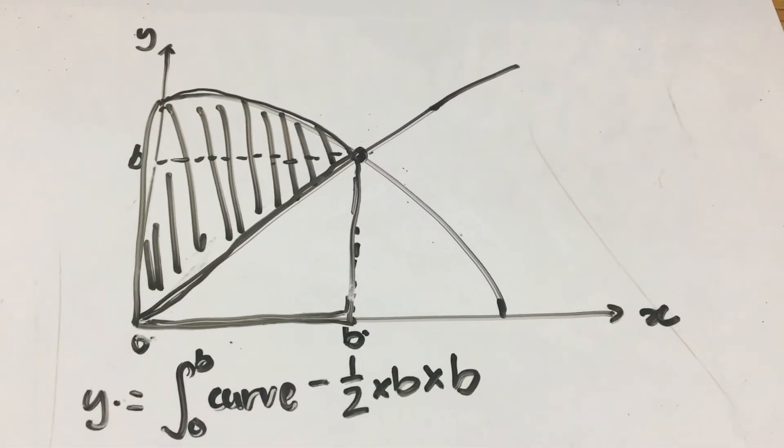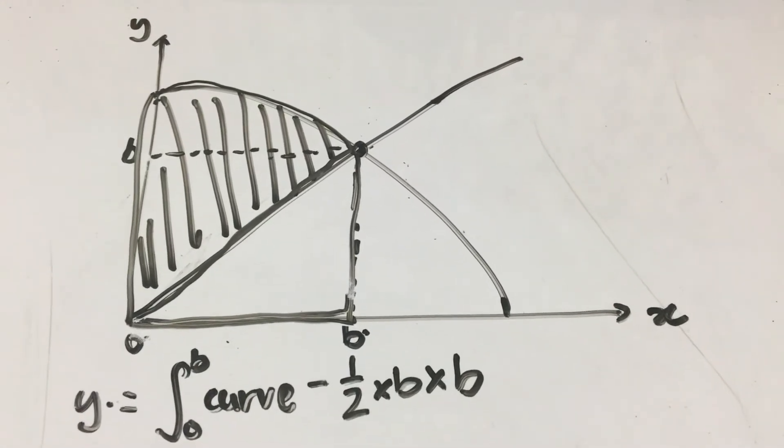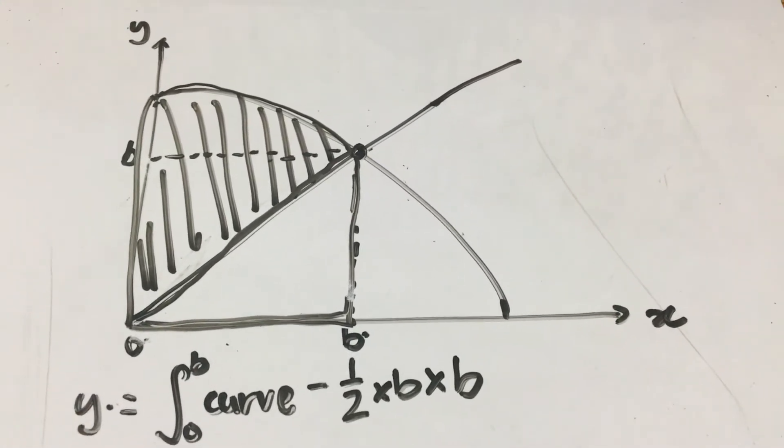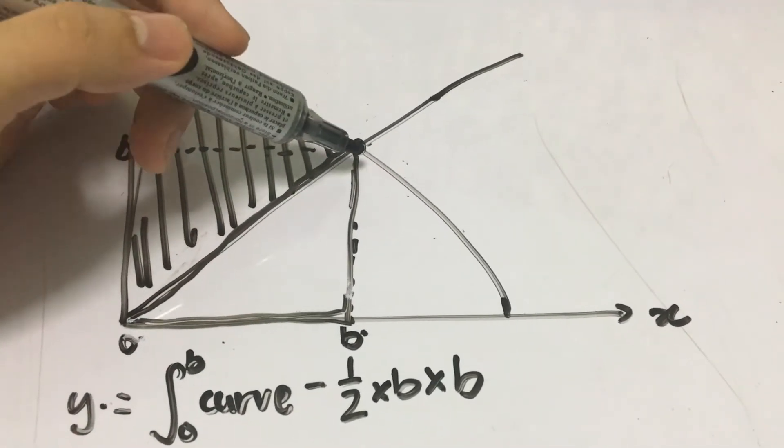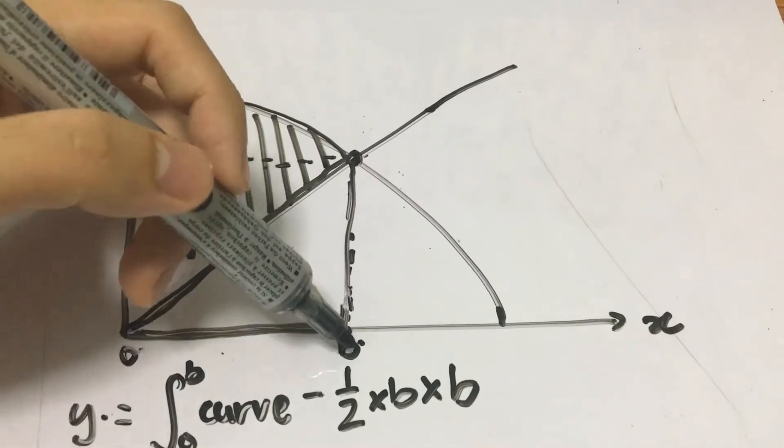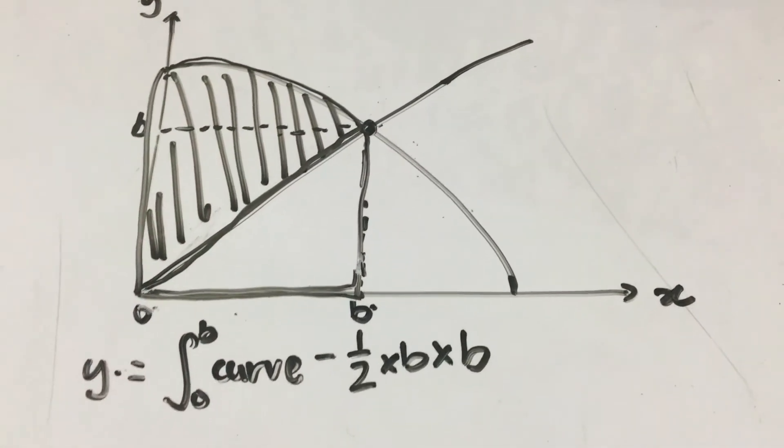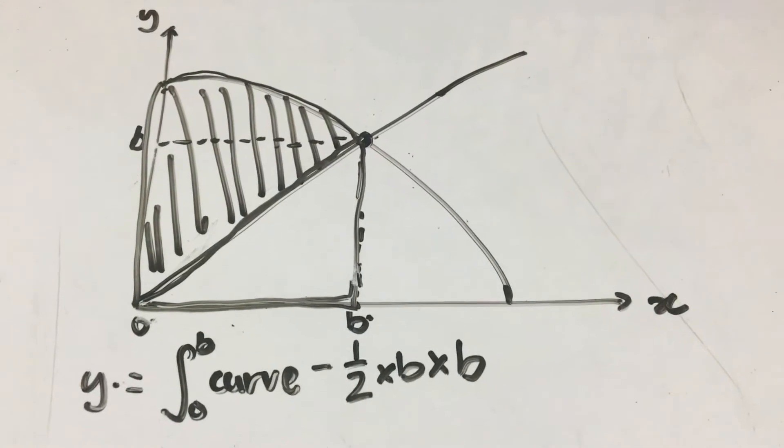Always when you do area under the curve, whenever you see an intersection point, just draw a dotted line down to the axis on both sides. This will make it much easier for you to solve.